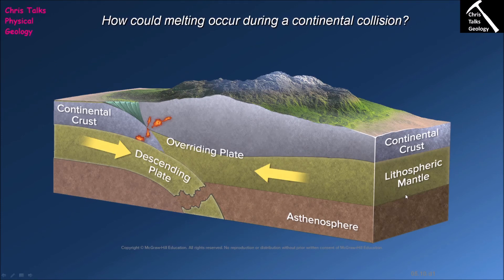The final type is a continent-continent convergent plate boundary. Two pieces of continental crust converge, but because continental crust is naturally buoyant it does not want to subduct, so the two pieces plow into each other. In this model one piece of continental crust is forced under the other — sometimes called under-thrusting. This is not subduction because the continental crust never enters the mantle.